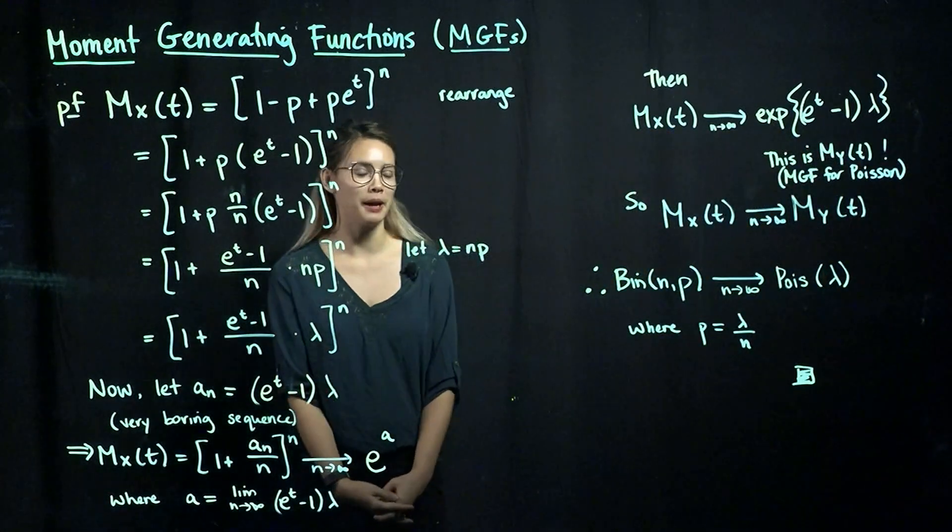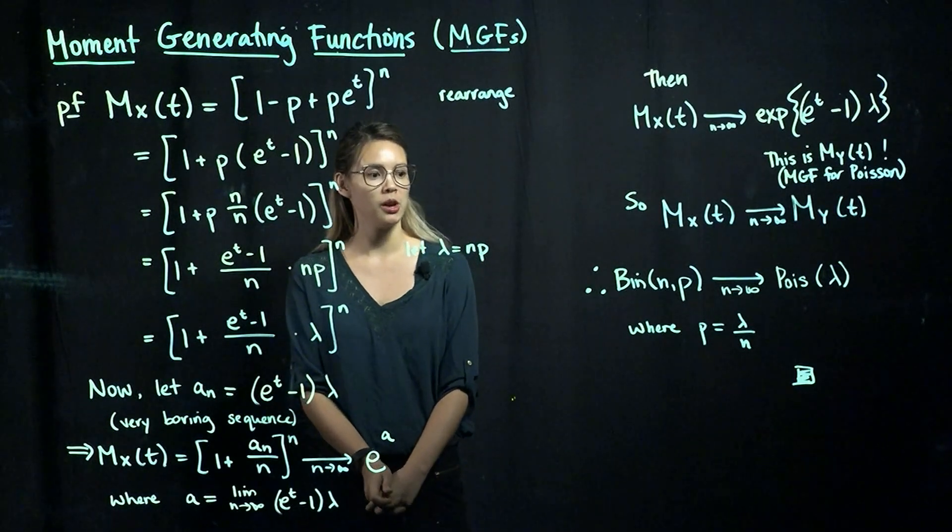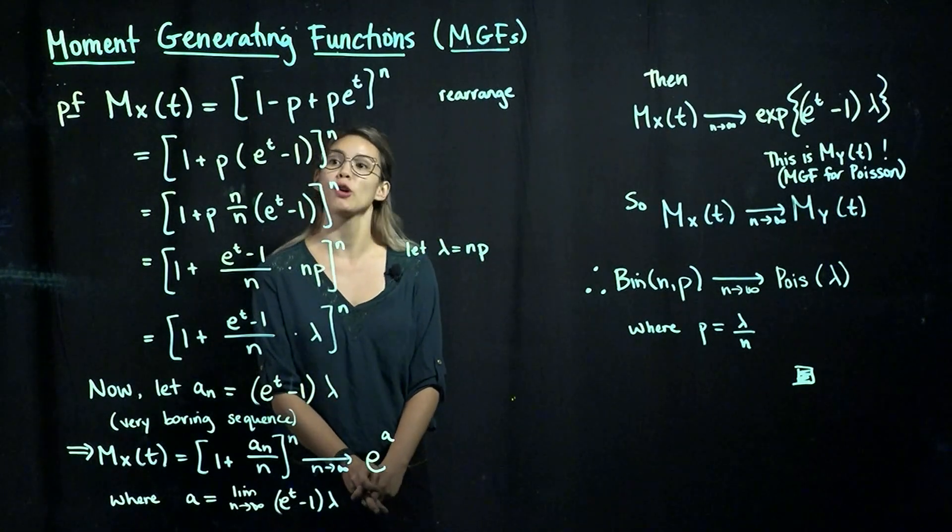In this video, we will show that a binomial random variable will converge to a Poisson random variable where p is equal to lambda over n.